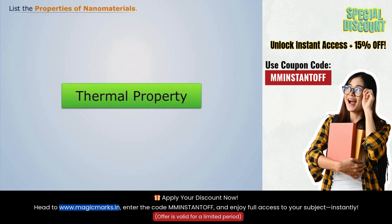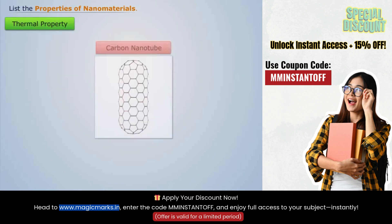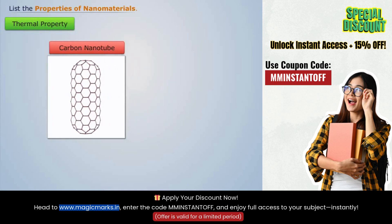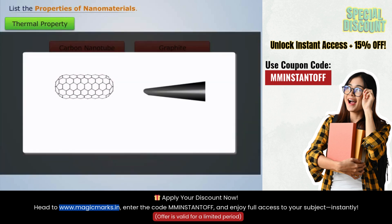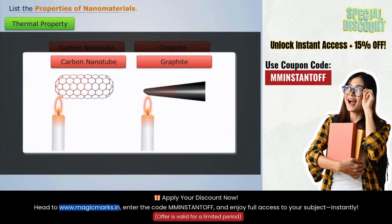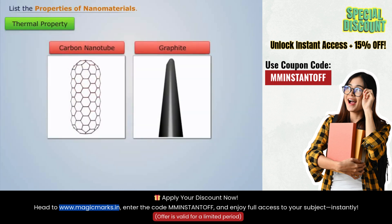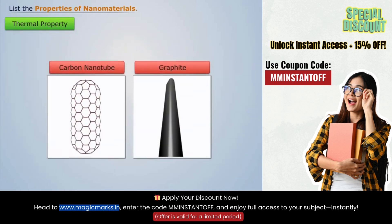Let us now discuss the thermal properties. Consider a nanomaterial, say carbon nanotube, and its corresponding material in bulk, say graphite. If we heat the ends of both these materials, we notice that heat conducts more rapidly in carbon nanotube than in graphite. Thus, we can conclude that the thermal conductivity of nanomaterials is high.